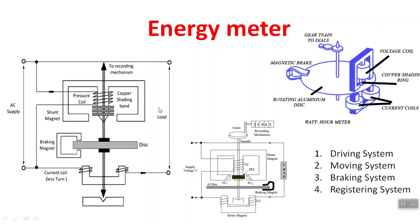For example, when you are using a TV or a fan, current passes through the load, goes through the phase, passes through the load, and returns back to the neutral. The current passes through the current coil, and the pressure coil is connected in parallel. When current passes through both coils, they produce a magnetic field — an electromagnetic field.